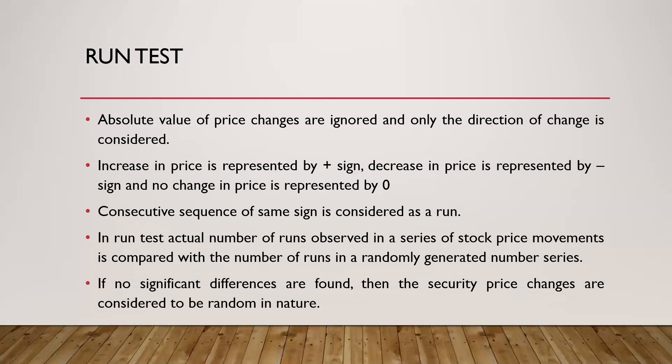For example, suppose the prices of a particular stock over a period are 50, 50, 45, 35. A consecutive sequence of the same sign is considered as a run. The first two prices are both 50, so the first run is zero — no change. Then the price fell from 50 to 45, which is a negative change. Then it fell further to 35, another negative change. These two consecutive negatives form one run, and the initial zero forms another run — so there are two runs in that series. If the next price rises back up, say to 46, that would be a positive run. As long as the change is in the same direction, it is considered a single run.